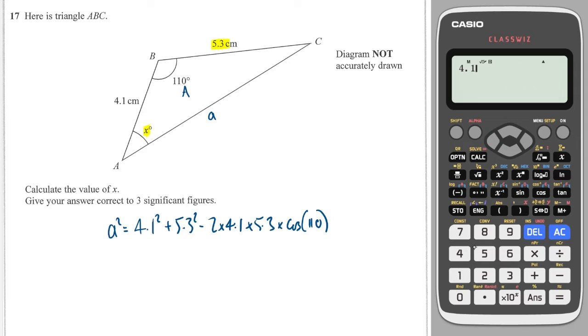I'll put that into my calculator, press equals, I'll square root the answer and I'll get 7.7.